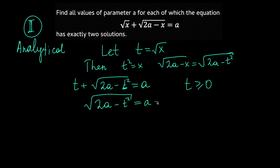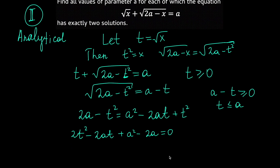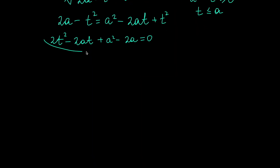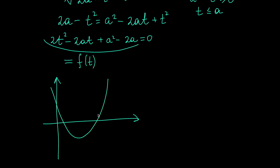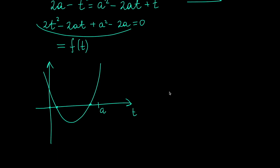This is easier because I only have to square the equation once. We get √(2A − t²) = A − t, and squaring gives 2A − t² = A² − 2At + t², with the restriction that A − t ≥ 0 (i.e., t ≤ A). So we again have a quadratic equation — but this time let's think about it differently by considering its graph.